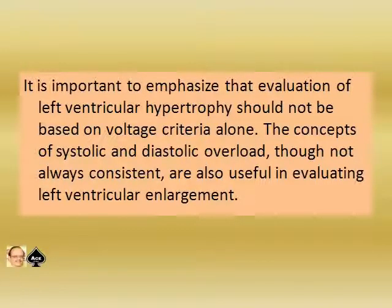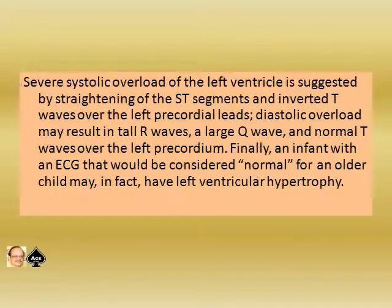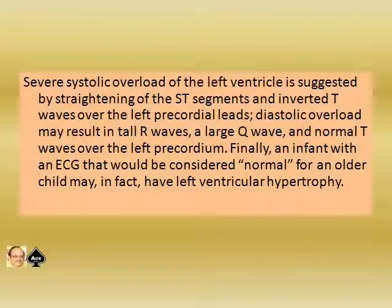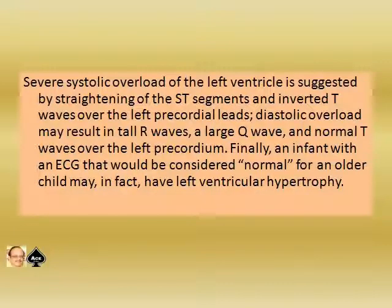It is important to emphasize that evaluation of left ventricular hypertrophy should not be based on voltage criteria alone. The concept of systolic and diastolic overload, though not always consistent, is also useful. Severe systolic overload is suggested by ST segment straightening and inverted T wave over the left precordial lead; diastolic overload may result in tall R wave, large Q wave, and normal T wave. Crucially, an infant's ECG that would be considered normal for an older child may in fact indicate left ventricular hypertrophy — always note the age of the patient.